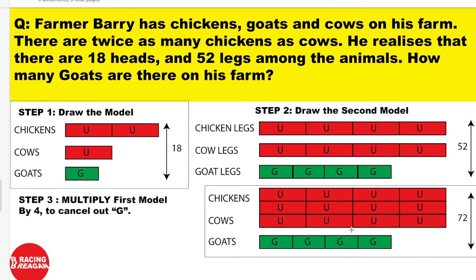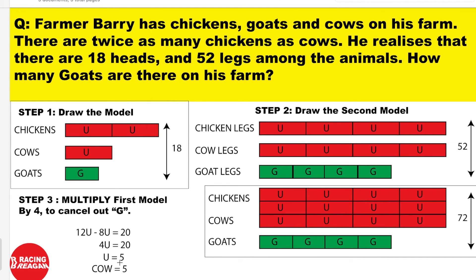Since we multiply by 4, the total becomes 72. Now take the leg model equation and subtract the multiplied head model equation to get rid of the goats and find how much 1 unit is. So 12 units minus 8 units equals 20. Since 12 minus 8 equals 4, that means 4 units equals 20. Divide 20 by 4 to get 5, so 1 unit equals 5. That means cows equal 5, since there is only 1 unit for cows.